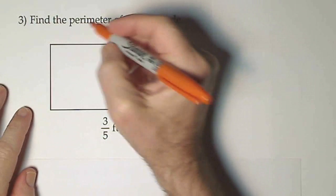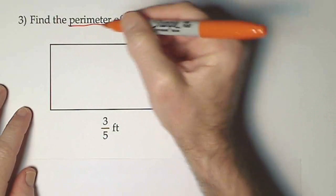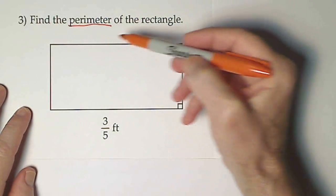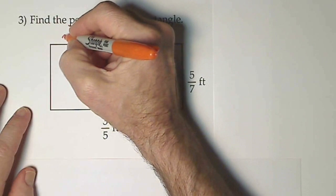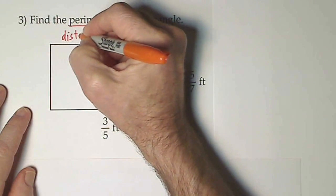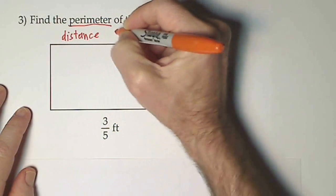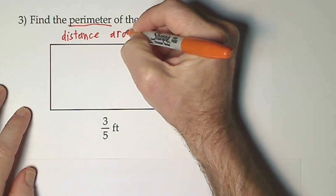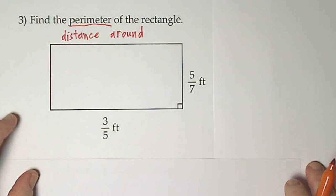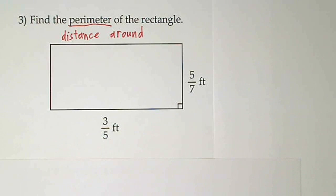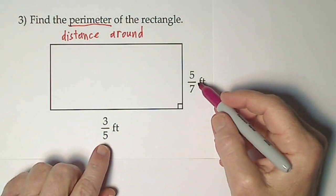The perimeter of a rectangle is a description of the distance around the rectangle. So perimeter is the distance around whatever shape it happens to be. On this one, they've given us two of the measurements.